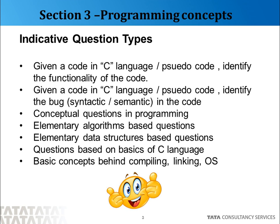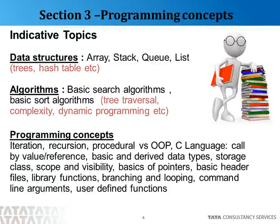These are some indicative types of questions. Moving on to the indicative set of topics, let us start with the set of 7 questions of medium difficulty which are part of subsection 1. In data structures, we will cover array, stack, queue and list, singly linked list and doubly linked list. In algorithms, the basic searching and sorting algorithms. In programming concepts: what is iteration, what is recursion, procedural language versus object oriented. Some C language questions will be there on topics like call by value, call by reference, the various data types — basic and derived ones — and the storage class like static and auto.